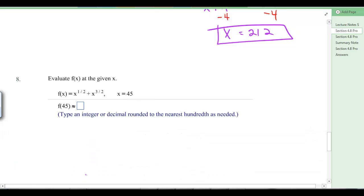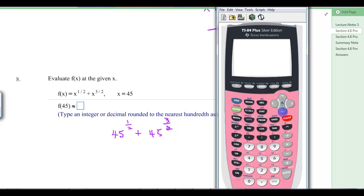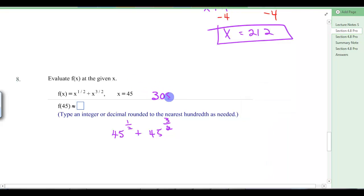Evaluate f of x at the given x. So this one, and it says type an integer or a decimal rounded to the hundredths. So we're going to say that this is 45 to the one-half plus 45 to the three-halves. If we do that on the calculator, we're going to have 45 raised to the one divided by two, that's one-half, then I'm going to tab over to get back down, plus 45 raised to 3 divided by 2, and we're going to hit enter, and we get this number, and it does say to round to the hundredths, so that's going to be 308.58. So that'll be that one, 308.58. But that's definitely a calculator question that could help you with that.